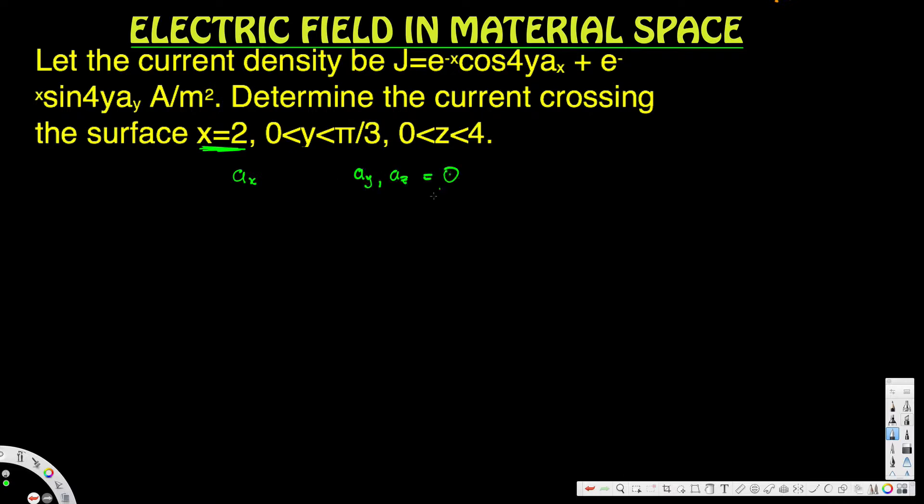We know that the current equation is given by the integral of J·dS. We integrate over the surface—J is the current density that's provided, so we can directly plug that in. dS equals dy dz in the x direction, so ax.